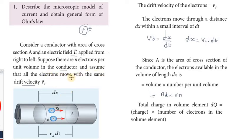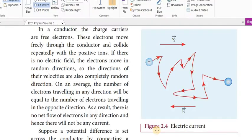Assume that all the electrons move with the same drift velocity. In the conductor, the charge carriers are free electrons.